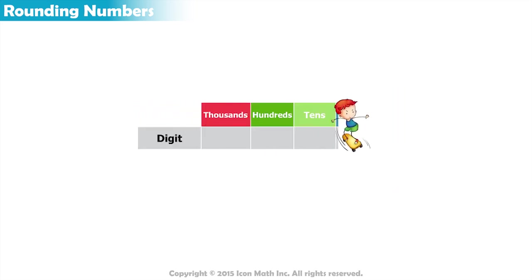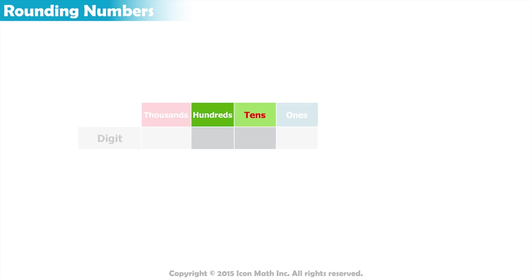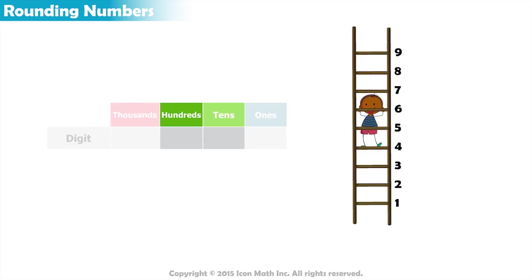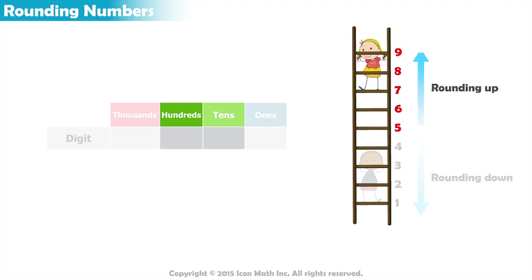The same thing goes when rounding to the nearest 100. We look at the digit in the hundreds place and the digit to its right, which will be in the tens place. If this digit is less than 5, we round down. If it is equal to or greater than 5, we round it up.